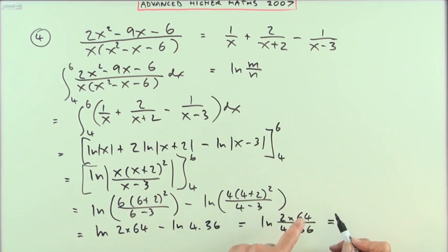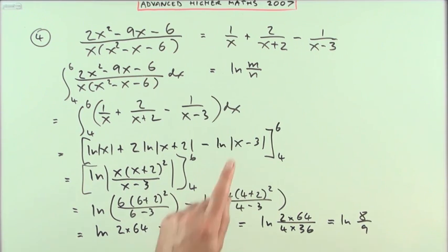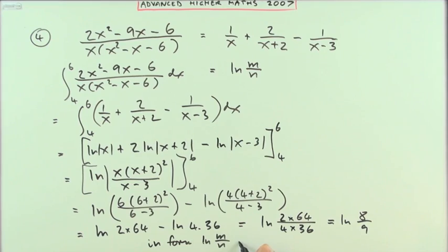So it's ln(8/9). But the question said find the values of m and n. Normally what I'd like to write would be just to play safe in the form ln(m/n). In other words, it's in the form ln(m/n), where m = 8 and n = 9. There, that keeps everyone happy.